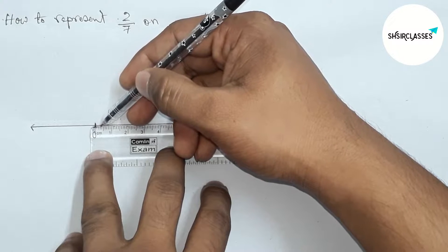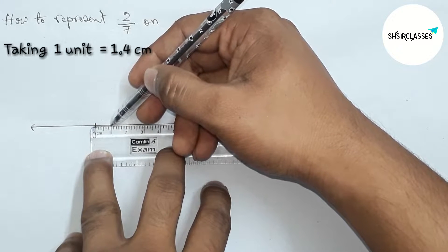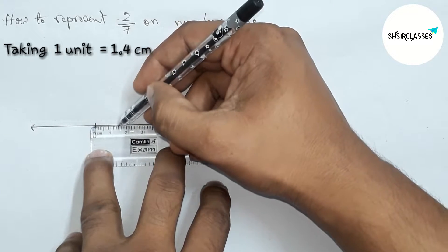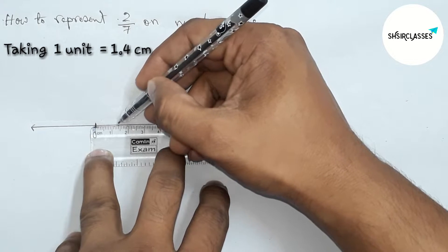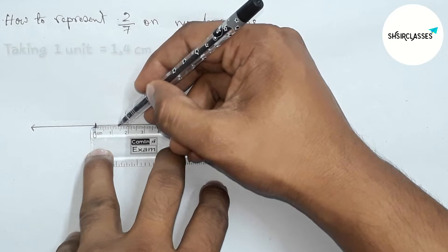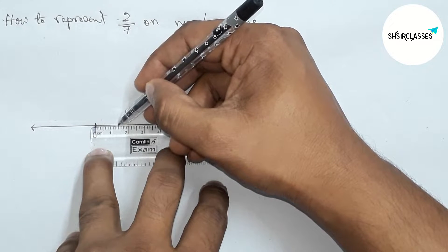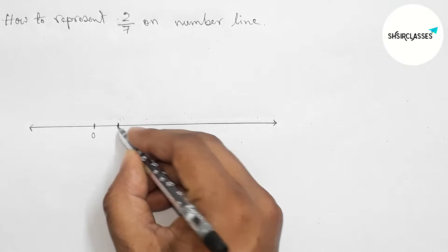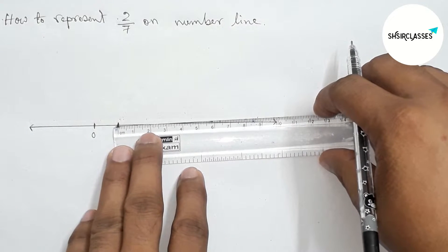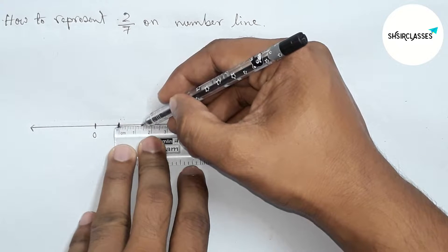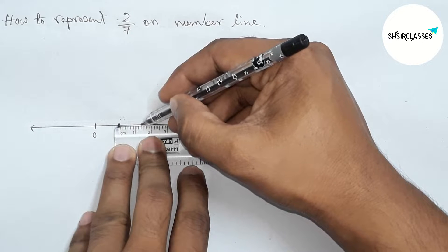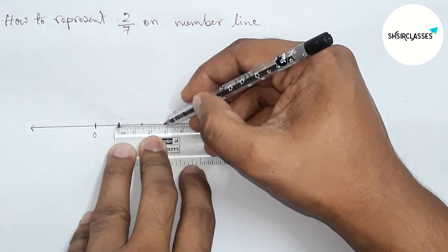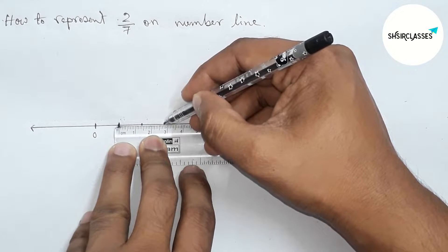Now with the help of scale, first marking the numbers on the line. From zero, counting 1.4 centimeter. The length between any two numbers equals 1.4 centimeter as one unit length. Similarly, taking 1.4 centimeter as one unit length and marking all the numbers with the help of scale.